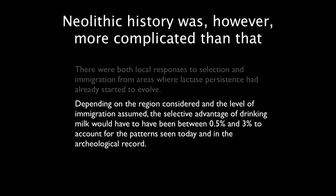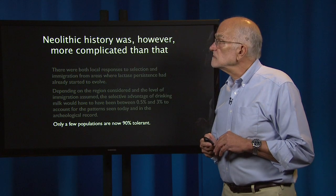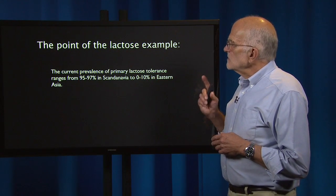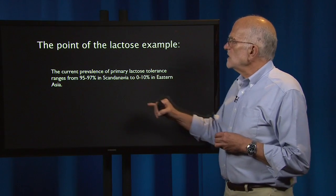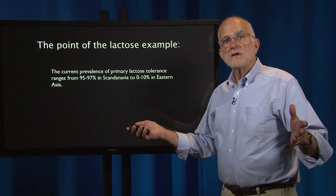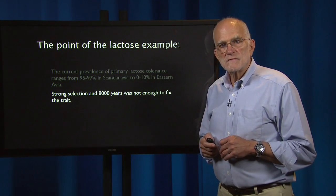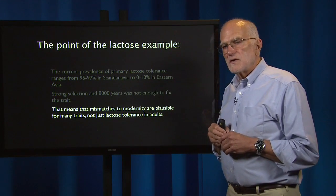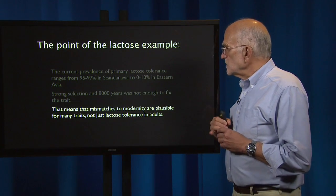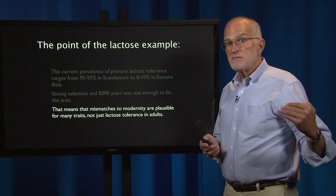Depending on the region and the level of immigration, the selective advantage of drinking milk would actually have to have been between about half a percent and 3% to account for the patterns we see both today and in the archaeological record. Only a few populations are now 90% tolerant. The current prevalence of primary lactose tolerance ranges from 95 to 97% in Scandinavia to 0 to 10% in East Asia — not everyone on the planet can digest milk as an adult. Strong selection and 8,000 years was not enough to fix the trait. This means that mismatches to modernity are plausible for many traits, and it gives us an example with a timeline and a dynamic rate showing that these lags in biology are real.